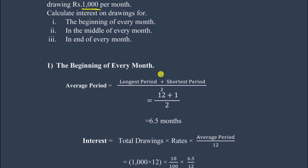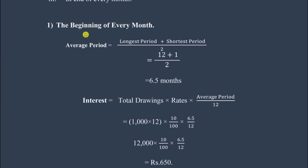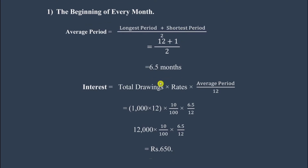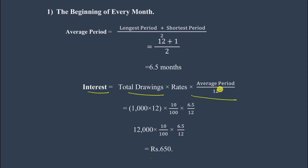Let us calculate one by one. First: the beginning of every month. For this, we first need the average period formula. The main formula is: Interest on Drawings = Total Drawings × Rate × Average Period / 12. The average period formula from the last video is: Longest period plus Shortest period, divided by 2.